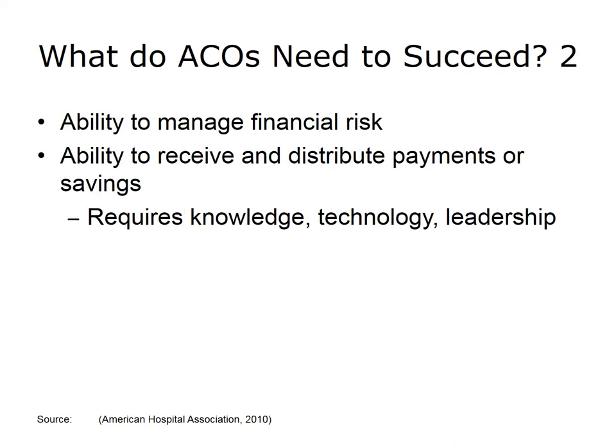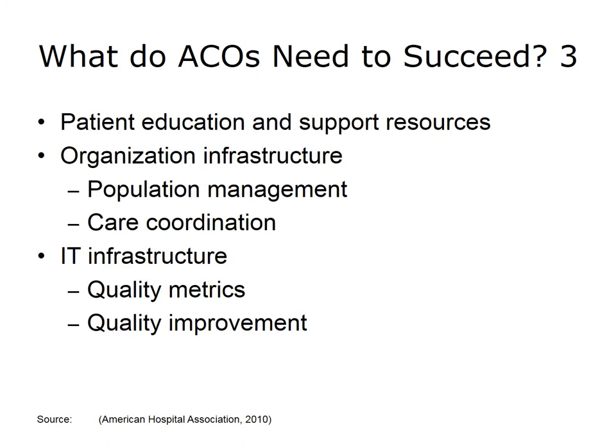ACOs will also require new financial capabilities in order to succeed. Some ACOs are formed by organizations with very little experience managing financial risk, and they may not have the ability to receive payments and then distribute them. These functions are associated with the insurance or payer aspects of the ACO approach and involve knowledge, technology, and leadership. To successfully improve care and reduce spending, ACOs also need new types of resources, including expertise in patient education and support — especially for those with complex and chronic conditions. Some ACOs will need to hire and train a new workforce for population management and care coordination. Finally, information technology will be needed to monitor and report on quality metrics and to support quality improvement activities.